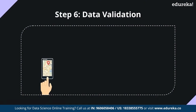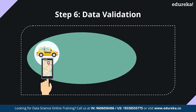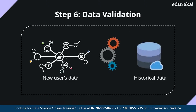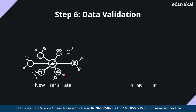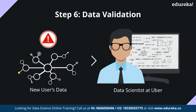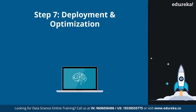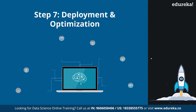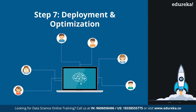Next is the data validation stage. Here the model is tested when a new customer books a ride. The data of the new booking is compared with historic data in order to check if there are any anomalies in the surge prices or any false predictions. If any such anomalies are detected, a notification is immediately sent to the data scientists at Uber who fix the issue. The final stage of data science is deployment and optimization. After testing the model and improving its efficiency, it is deployed to all users, and customer feedback is received and any issues are fixed.